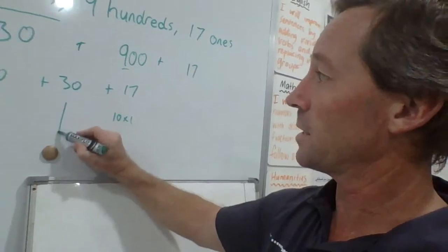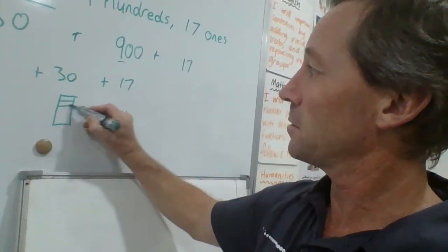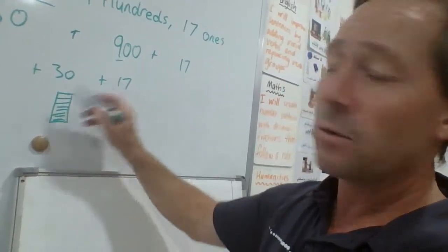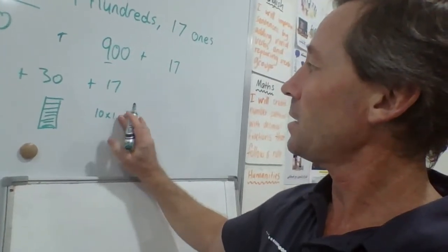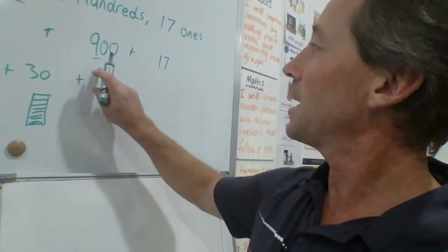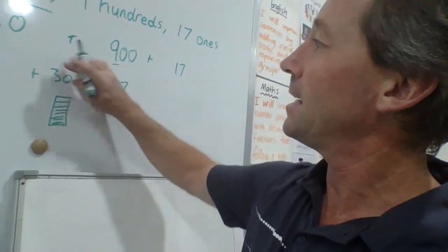We've got the 17. So what I could do now is, because there's 17 ones and we know 10 ones are equal to 10, which is one of those rods that go 1, 2, 3, 4, 5, 6, 7, 8, 9, 10, we can bring that over. So let's change that - take that one, add that 10 onto here.